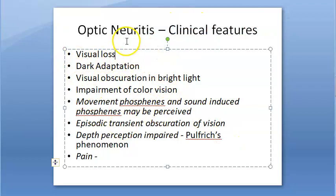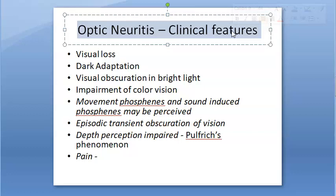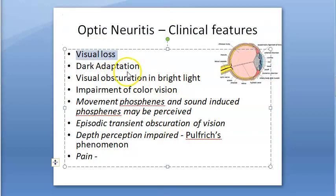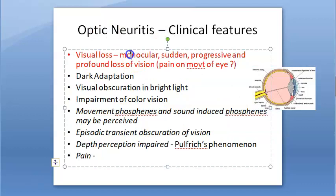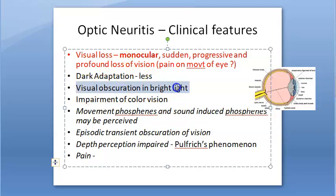Now for clinical features: if the optic disc or optic nerve behind the disc is inflamed, patients will definitely have visual loss. Monocular, sudden, progressive, and profound visual loss is the hallmark of acute optic neuritis. Dark adaptation may also be reduced. Visual obscuration in bright light is a typical symptom of acute optic neuritis.